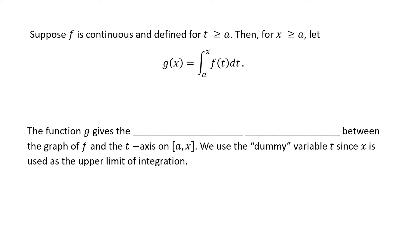Suppose f is continuous and defined for t equal to or greater than a. Then for x equal to or greater than a, let g of x equal the integral from a to x of f of t dt. The function g gives the net area between the graph of f and the t-axis on the closed interval from a to x. We use the dummy variable t since x is used as the upper limit of integration.